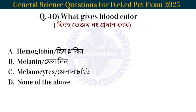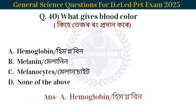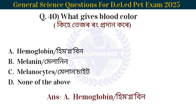Next question: What gives blood its red color? The answer is hemoglobin. Hemoglobin gives blood its red color.